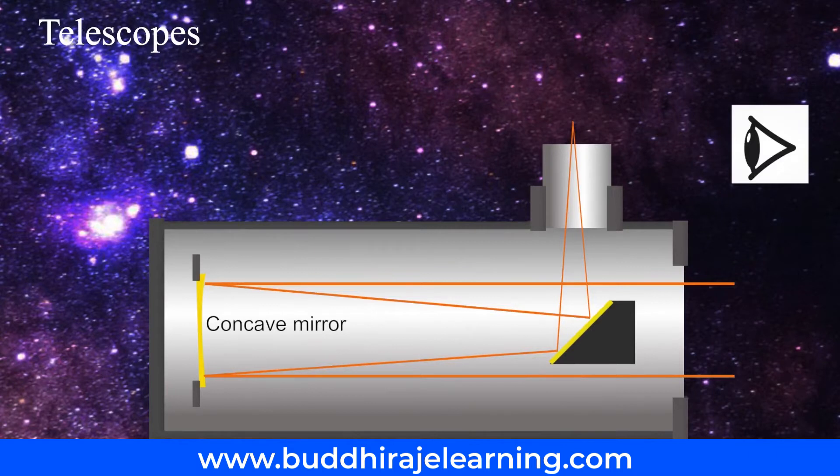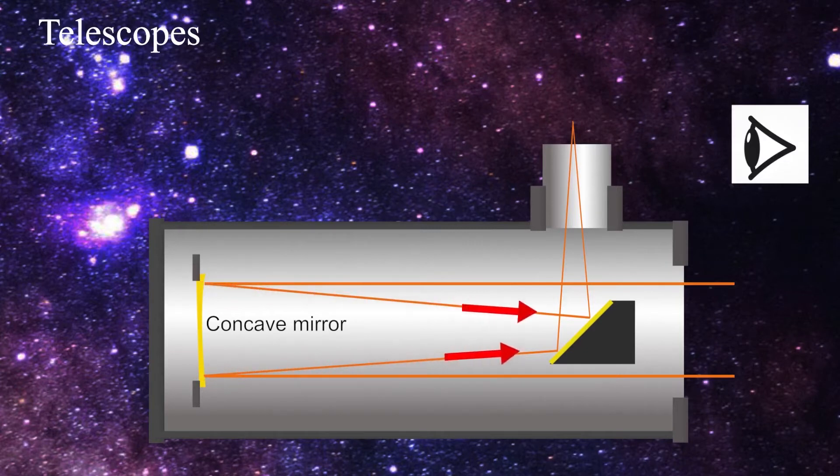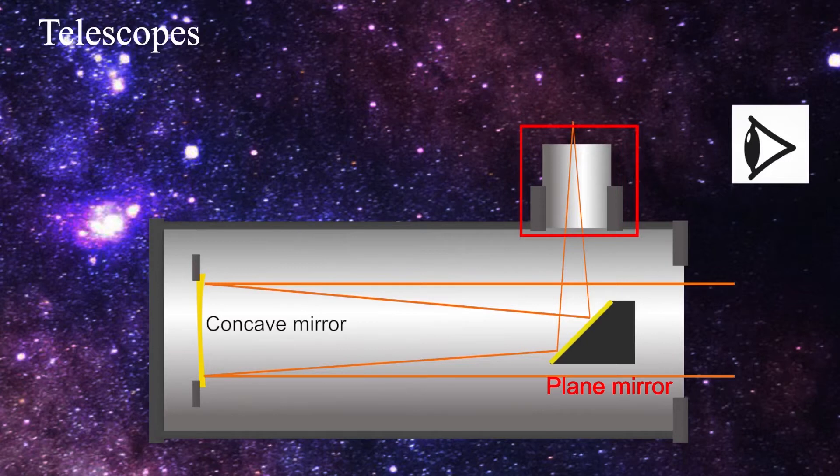By the Newtonian method, light rays coming from space are reflected by the concave mirror. Before these reflected rays converge at the focus, they are deflected again by a small plane mirror. As a result, they get focused at a point lying on the perpendicular to the axis of the telescope cylinder. They pass through the eyepiece and we get a magnified image of the source.